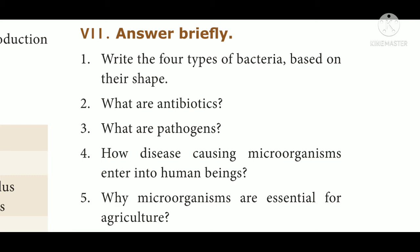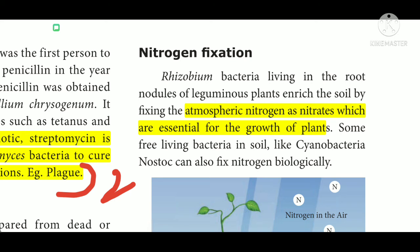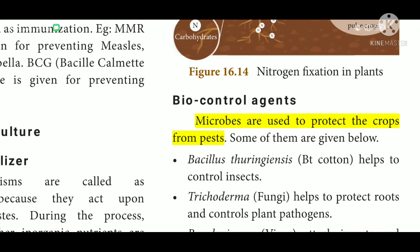Question 5: Why are microorganisms essential for agriculture? Microorganisms are called decomposers because they act upon degradable matter. During the process, nitrates and other inorganic nutrients are released into the soil, making the soil fertile. Additional points include nitrogen fixation and biocontrol agents.